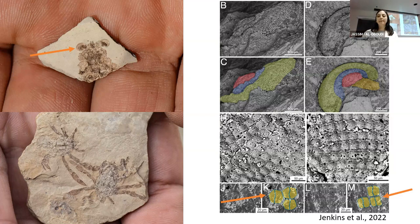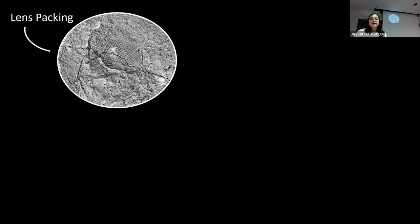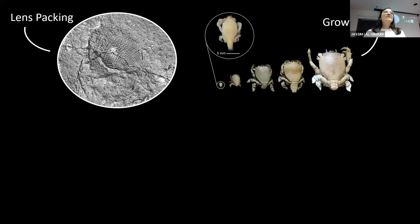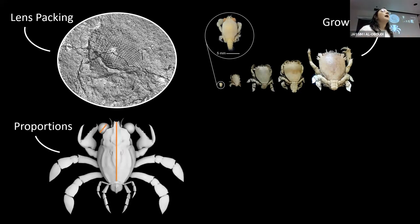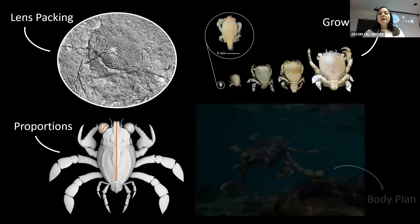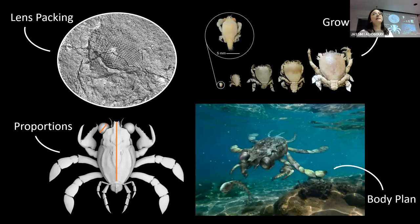When you have these things in large sample sizes with such excellent preservation, you can begin to ask how this crab was actually using its eyes to navigate the world. We took a multi-pronged approach: we looked at the lenses and quantified the arrangement of individual facets to figure out how crisp an image this animal could see; we looked at growth rates — if you're using your eyes you tend to grow them quickly; we looked at body proportions; and we supported those inferences with how the rest of the body plan looks.